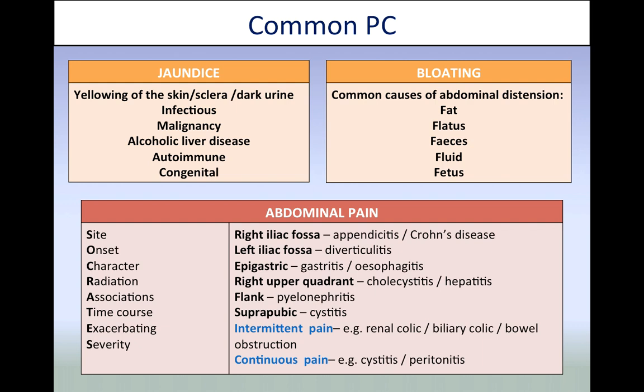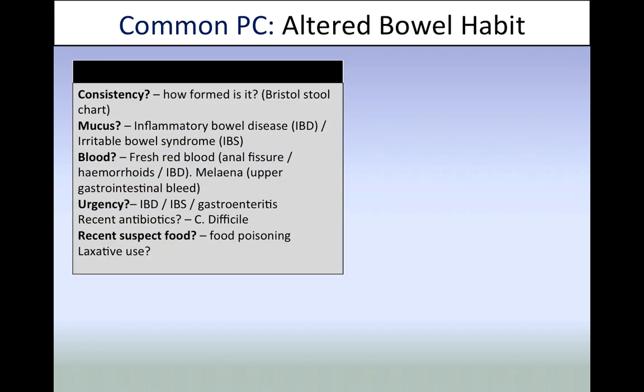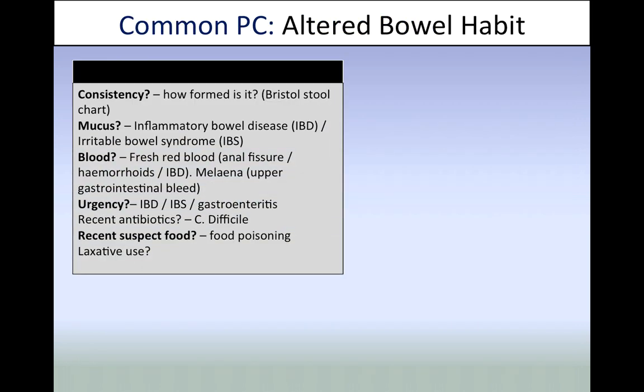Abdominal pain is a key presentation — make sure you SOCRATES the pain, as this will help distinguish the many causes. Getting the location and nature of the pain is very helpful. Moving on to altered bowel habit — just like vomiting, it's important to get a good description of the stool and bowel movements. Is there blood or mucus in the stool, which could indicate IBS, IBD, or fissures? Is the stool dark and tar-like, suggesting bleeding higher up in the GI tract? Or is it floaty and pale, suggesting biliary obstruction?